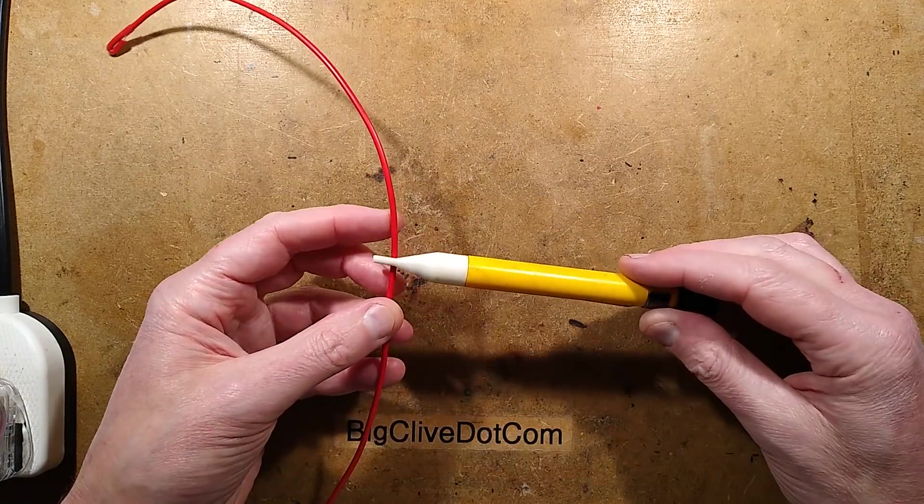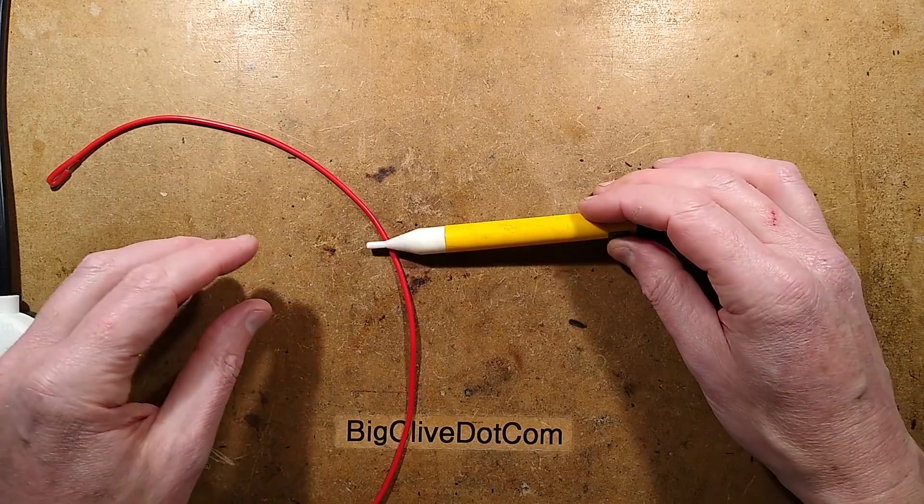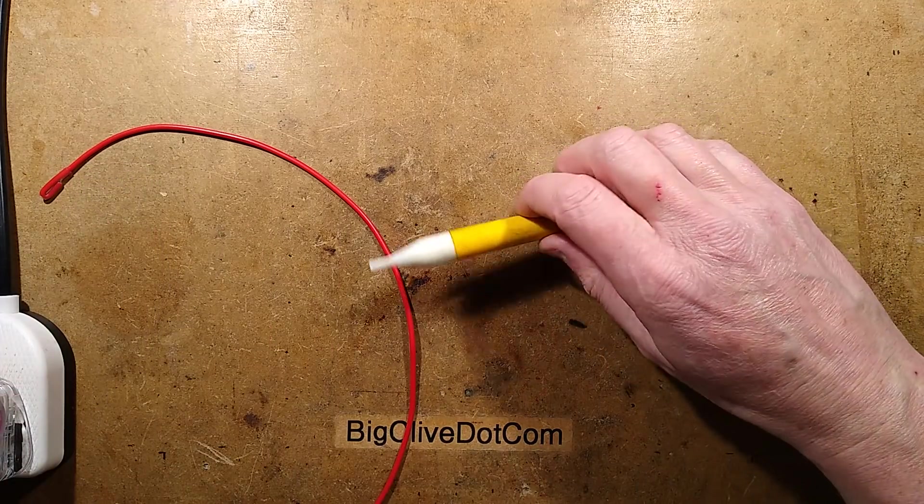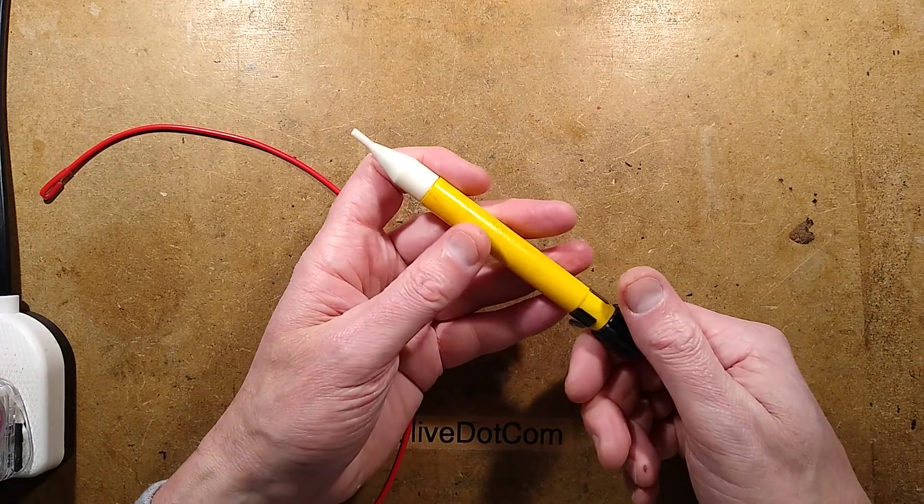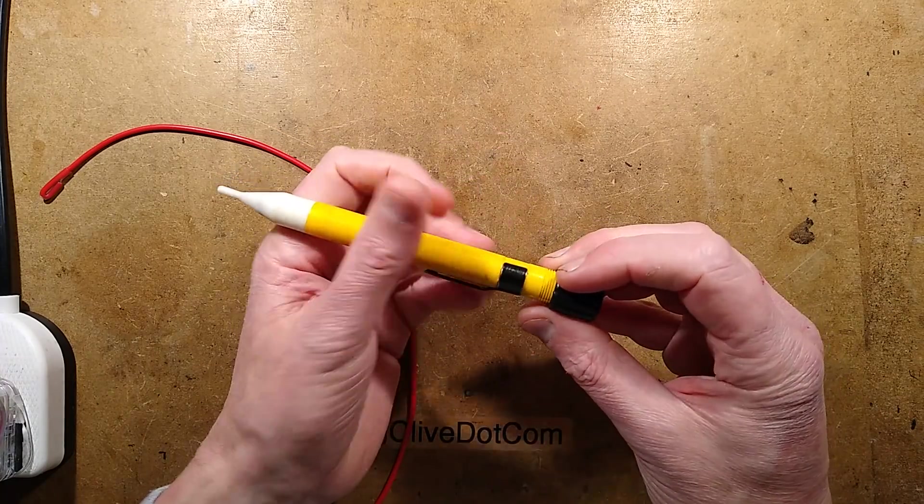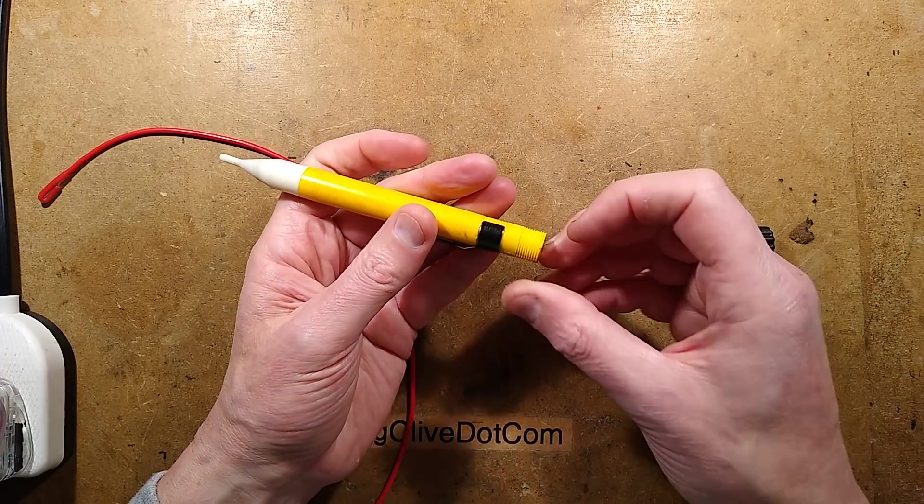Sometimes the volt sticks are sensitive enough that they can just act like an antenna and actually light up, but others you actually have to be holding it to actually do that. So let me open this one. I will explore it and then I shall reverse engineer it.